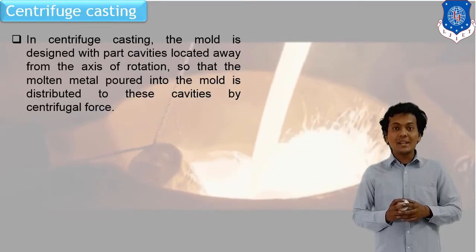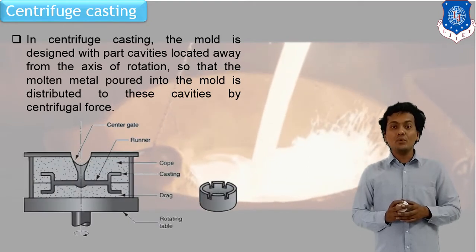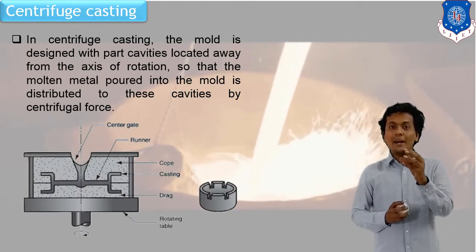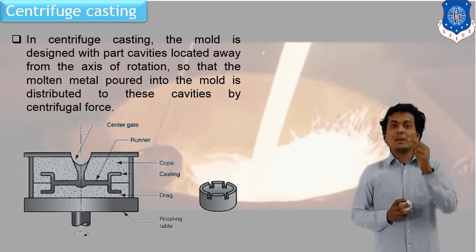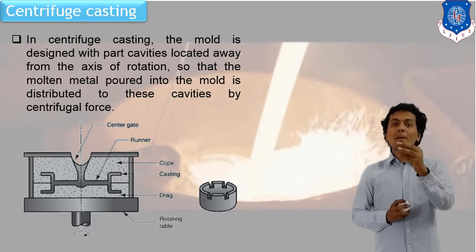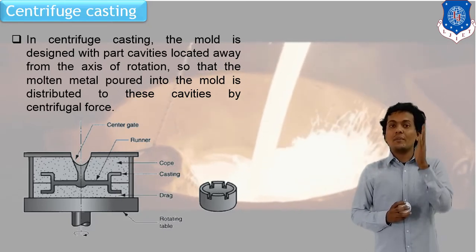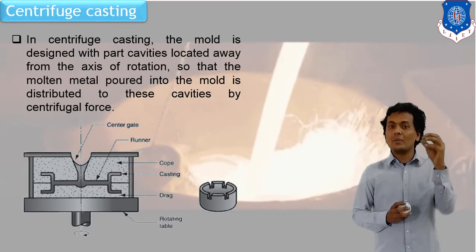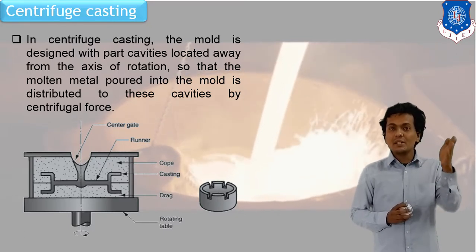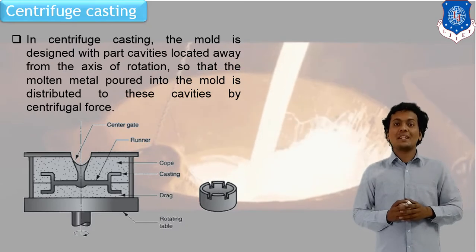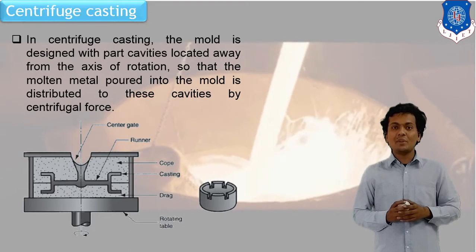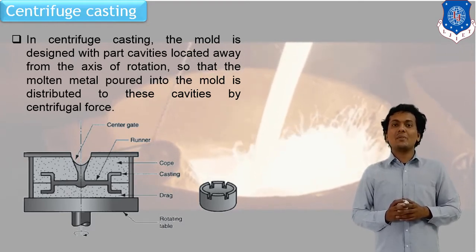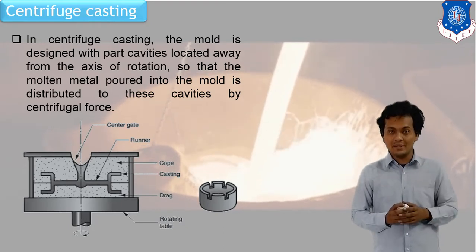In centrifuge casting, the desired product is collected at some distance from the center line. After trimming, we cut the final product that has formed at that distance from the center line. The concept used is centrifugal, but this is how we classify centrifugal casting into three subcategories.